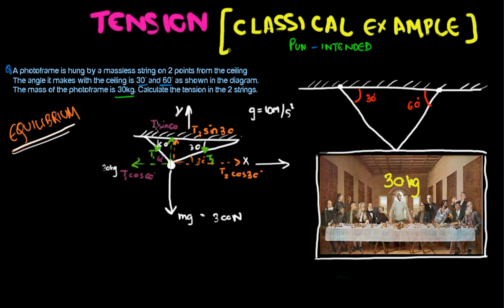T1 sine 60 and T2 sine 30 act upward, while gravity acts downward, so in the y direction these three forces must cancel out. In the x direction, T1 cosine 60 and T2 cosine 30 act in opposite directions, so they are equal to each other. This allows us to form two equations.